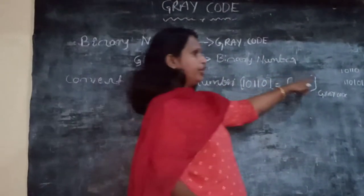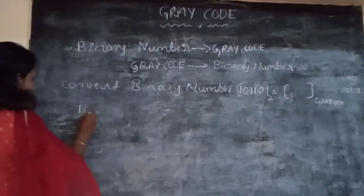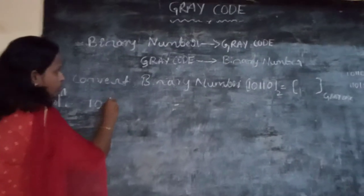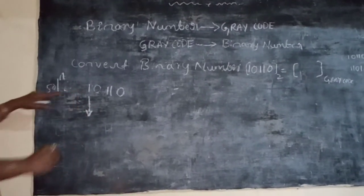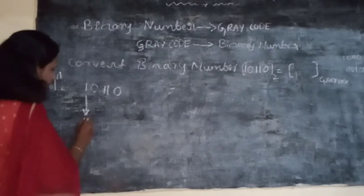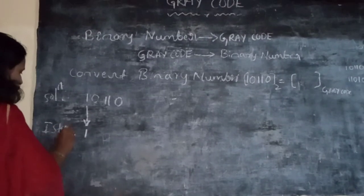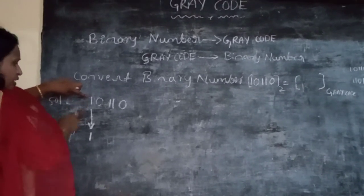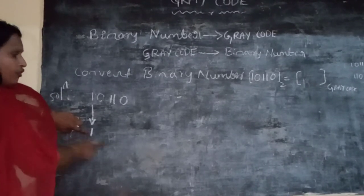Binary number into grey code. The binary number is 10110110. The first digit of the grey code is exactly the same as the first digit of the binary number. So in the first step, write the binary number and keep the first digit identical.